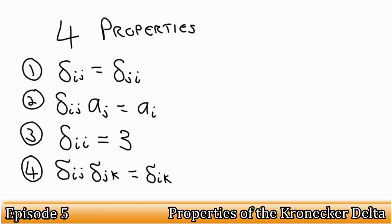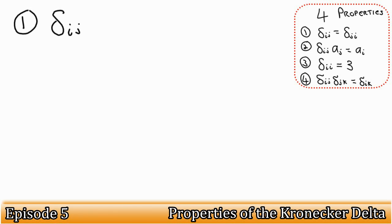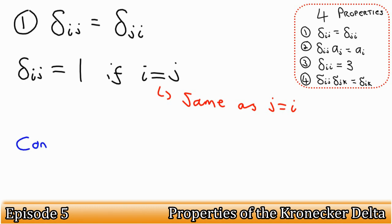So why does each property hold? Let's have a look at the first one. Consider the components. There are always 0 if i is not equal to j, and 1 if i is equal to j. If i and j swap positions, the result is exactly the same. It's best to think about this one in terms of a matrix. We can see that this matrix is symmetrical when looking at it from the top left to the bottom right.